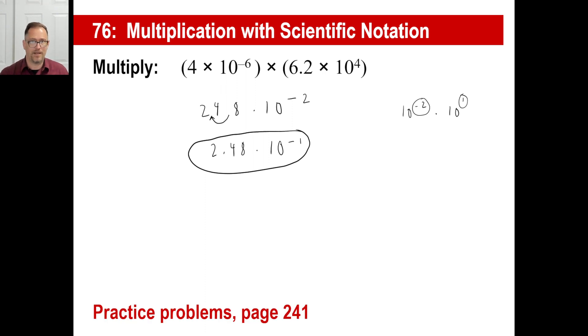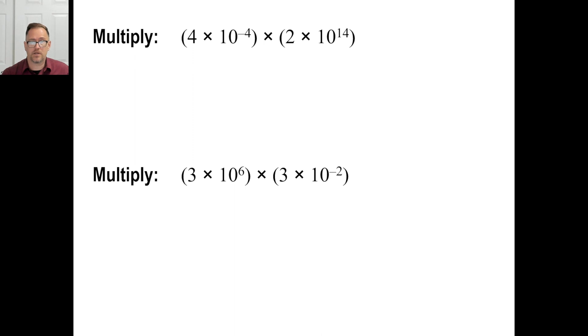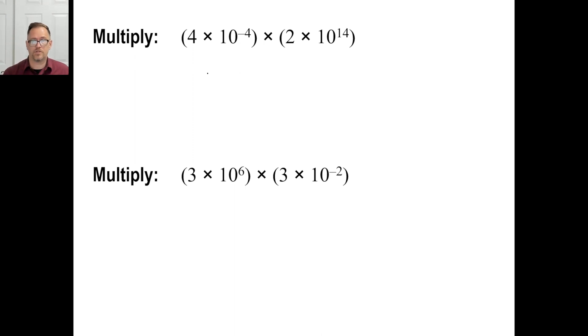Try page 241 on the practice problem and see what you get. All right. Well, let's go over the first one here. 4 times 2 is 8. 10 to the negative 4 plus 14 is 10. And there you go. That's it.